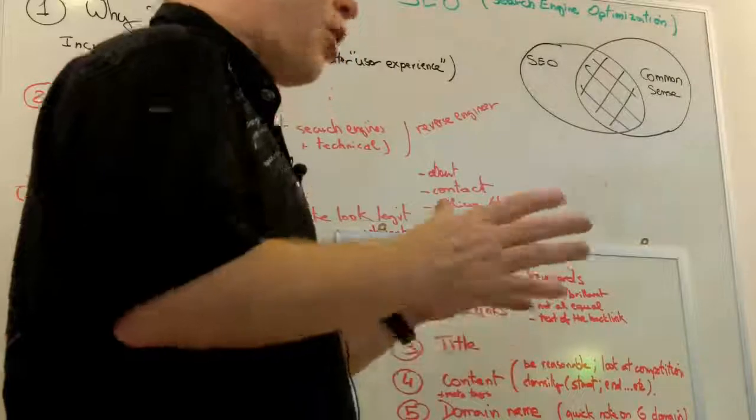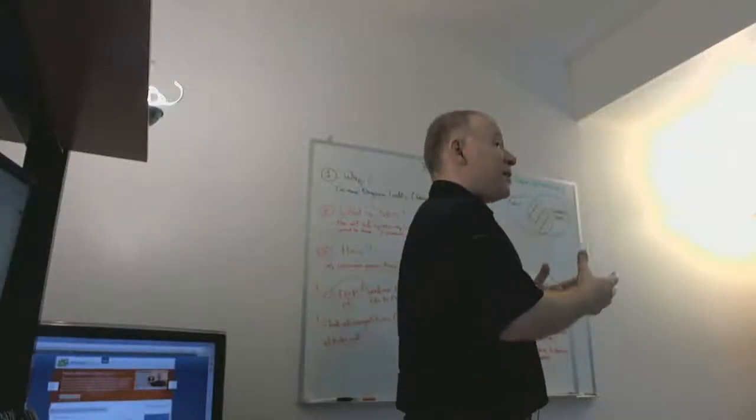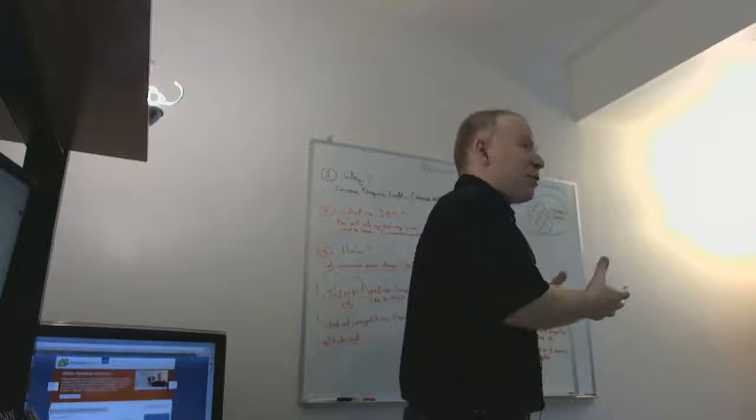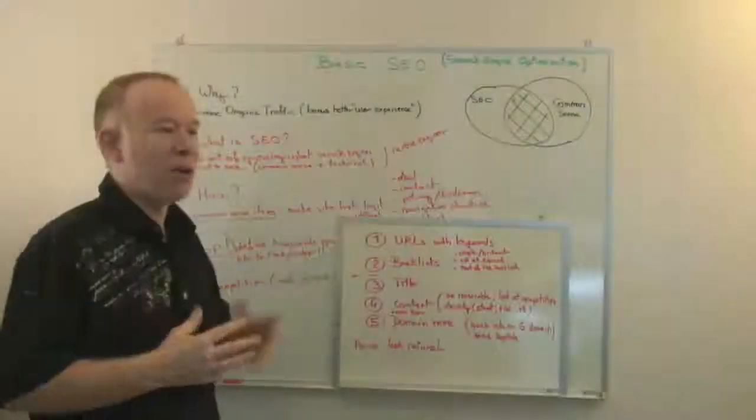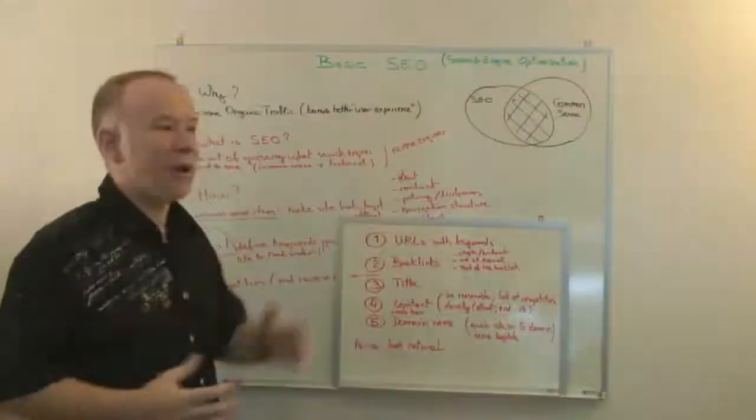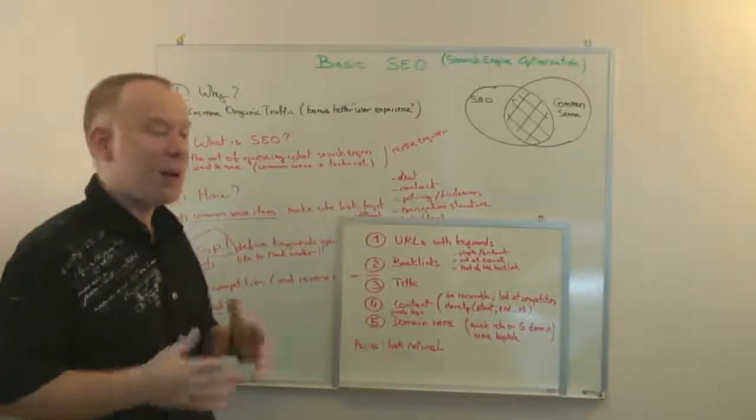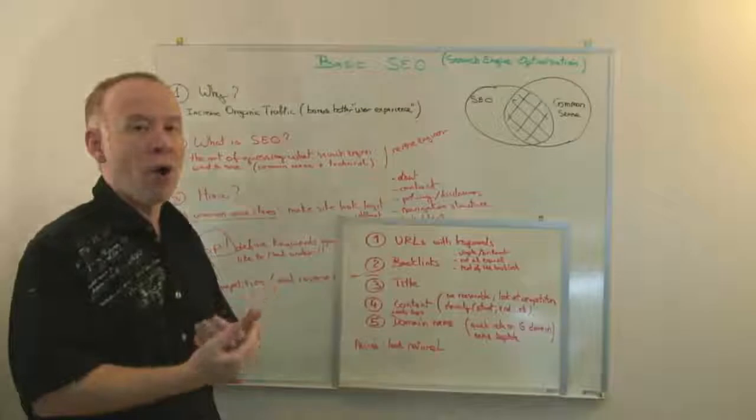When you write content on your website, you want to be careful with the density. Try to have at least the keyword you're looking for in there multiple times. The exact number will vary depending on the size of your article. Up to seven times might not be unreasonable if it makes sense. You don't want to deform your article.